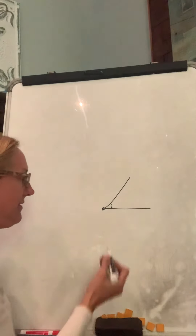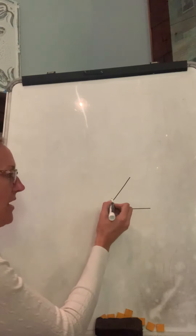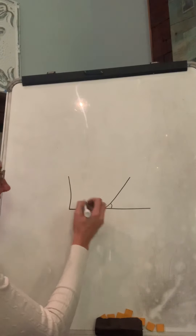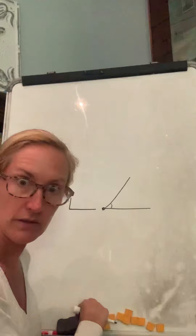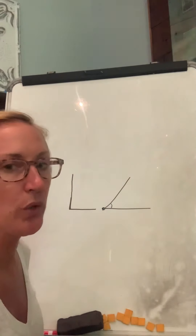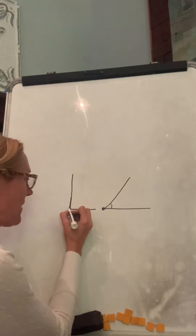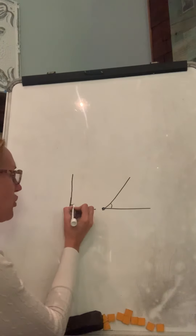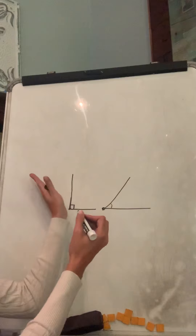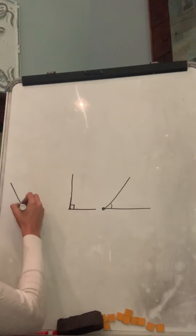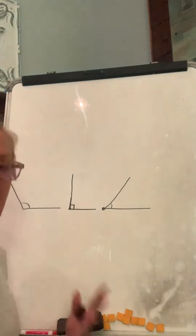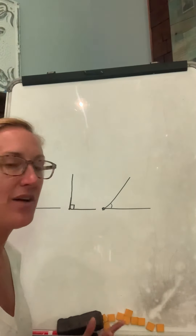There's an angle right there. Now if this keeps opening up until it's completely straight — let me try to make it straighter, you can use your ruler if you want. It intersects right there, so we have another angle. This line might open up even more to make a nice wide open angle.